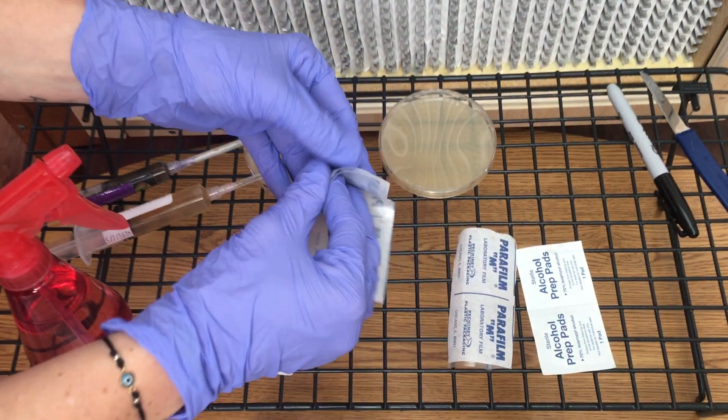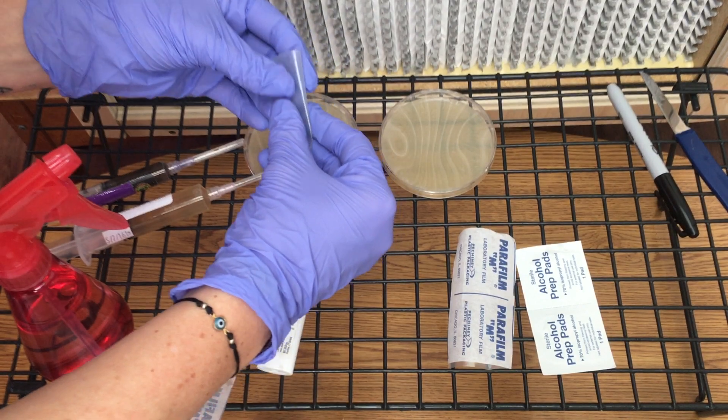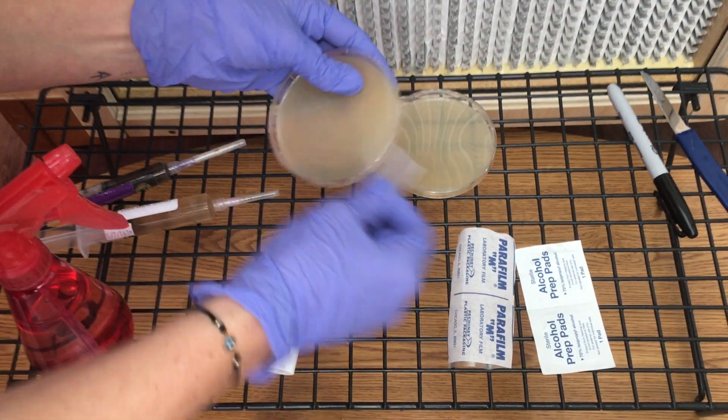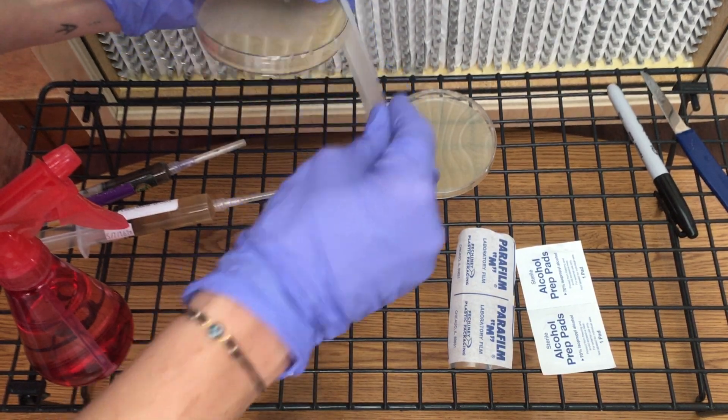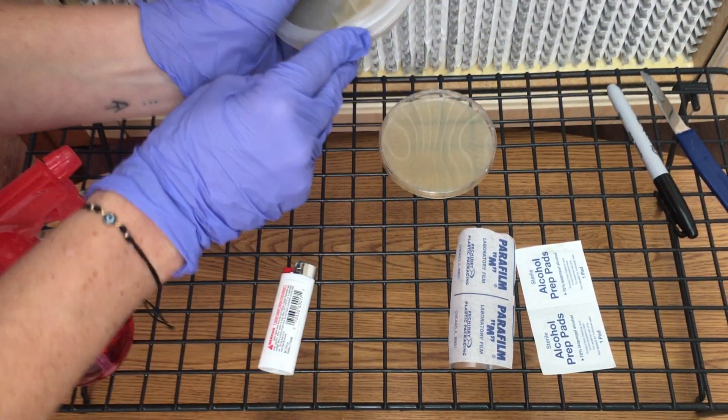go ahead and wrap the petri dishes with parafilm and then set your petri dishes in a dark warm place, about 77 to 82 degrees Fahrenheit, and watch your mycelium grow. You should start to see mycelium growth in about five to seven days.